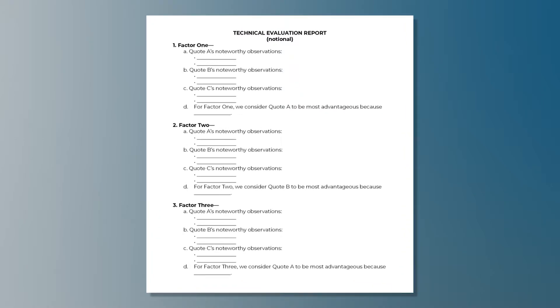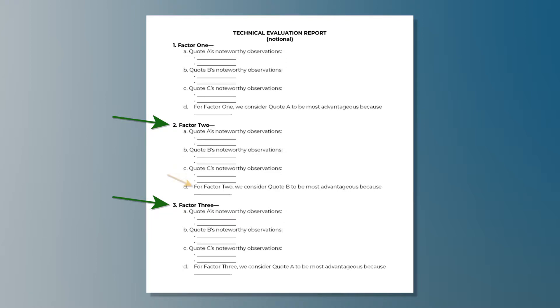This is just a template. Using this template, the evaluator or evaluation team will start with factor one and write its observations — good and bad — for quote A with a few bullet points, then do the same for quotes B and C. No adjectival ratings are assigned, just the observations that are pertinent for that factor. Then the evaluation team compares all three quotes for factor one and identifies the quote that is most advantageous to the government and explains why. In this sample, let's say quote A is most advantageous. The team does the same thing for factors two and three — let's say quote B is most advantageous for factor two and quote A for factor three. And that's it — the technical evaluation report is done.